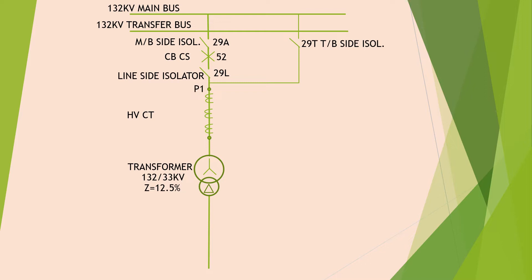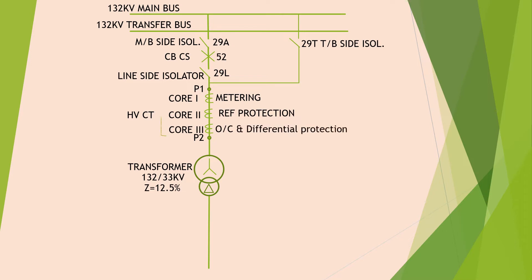P1 and P2 are its polarity terminals; P2 is connected to the transformer side. The HV CT has three cores: core 1 is used for metering purpose, core 2 is used for REF restricted earth fault protection, and core 3 is used for overcurrent and differential protection. This is the LV side CT.